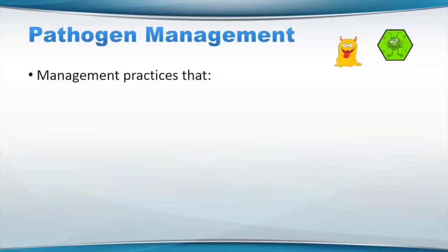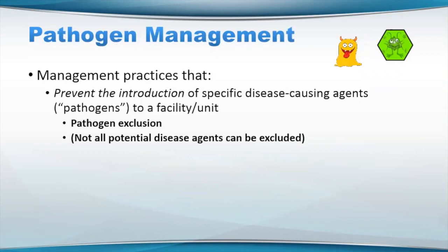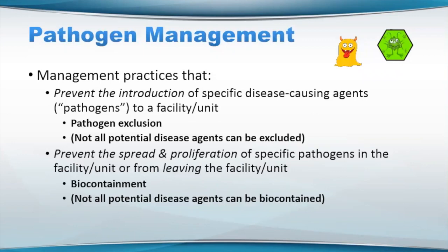Now we're going to talk about pathogen management, and there's a lot to cover. Pathogen management includes practices that prevent introduction of specific disease-causing agents onto a facility or unit — this is considered pathogen exclusion. It's really important to remember that not all pathogens or potential disease agents can be excluded from your facility, because some of them are going to be inherently in the environment and more of an issue when the husbandry is bad. We also want to prevent spread and proliferation of some of these pathogens on the facility or from leaving your facility — and this is considered biocontainment. Not all disease agents can be biocontained because of the nature of the organism.